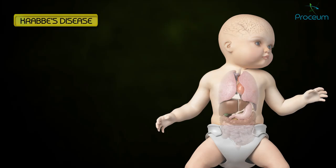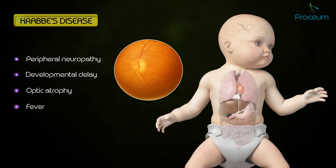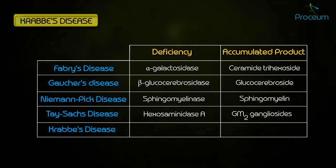Krabbe's disease presents with peripheral neuropathy, developmental delay, optic atrophy, fever, globoid cells, and irritability. Krabbe's disease has a deficiency in galactocerebrosidase, leading to an accumulation of galactocerebroside.